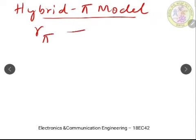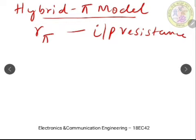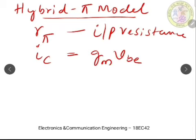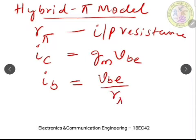The hybrid pi model is the one which includes the resistance Rpi — the input resistance looking into the base region. The model gives us IC = Gm × Vbe, and also represents IB = Vbe / Rpi.